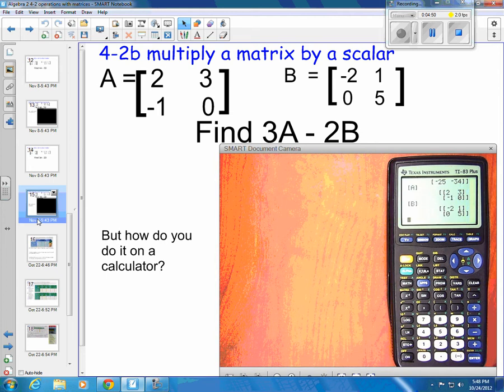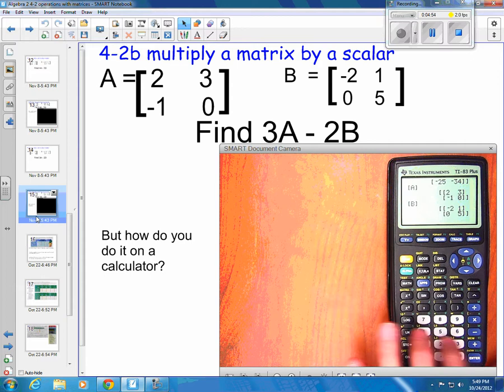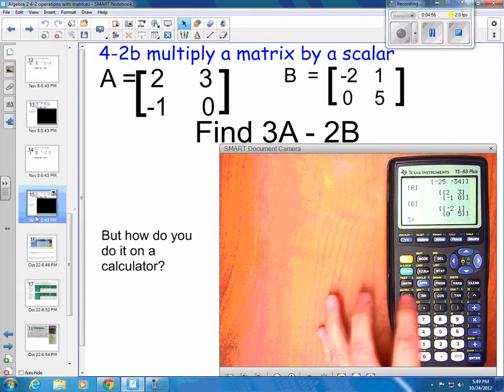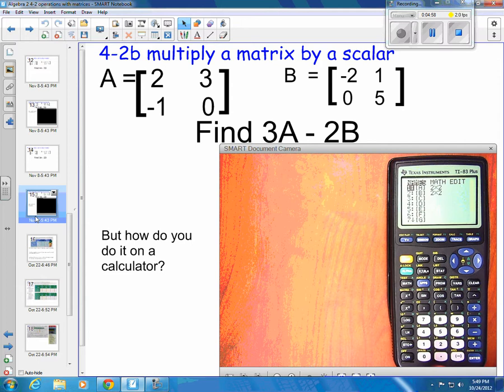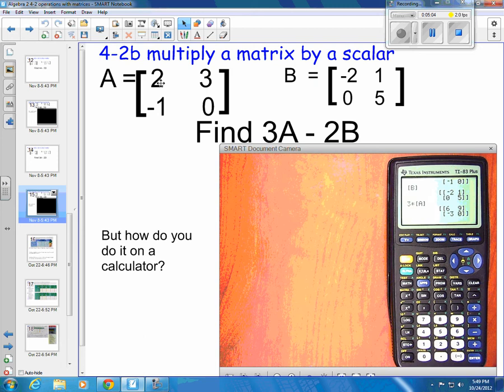Now, if I didn't want to put in that whole part up there, I could just take 3 times A. So, if I take 3 times 2nd matrix and 2 is A, so that's going to take 3 times A. And that should be 3 times 2 is 6, 3 times 3 is 9, 3 times negative 1 is negative 3, 3 times 0 is 0. Okay, so that's good.